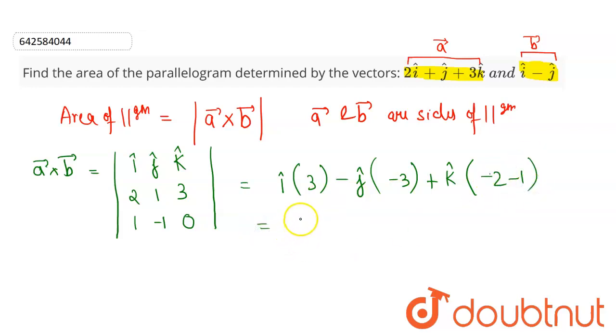So this is equals to 3 i cap. So minus 3 is here, so that means it will become positive. So this will be 3 j cap minus, so minus 2 minus 1 is minus 3. So this will be minus 3 k cap.